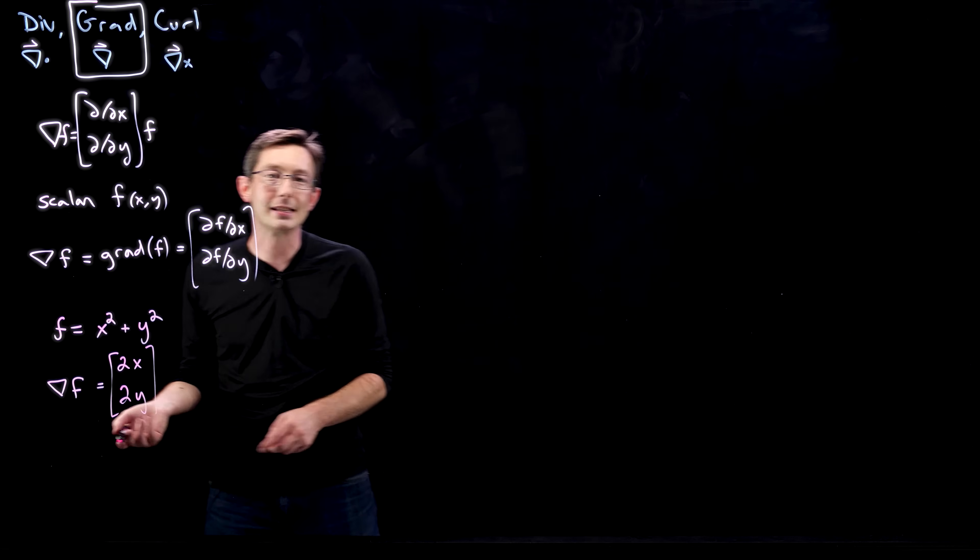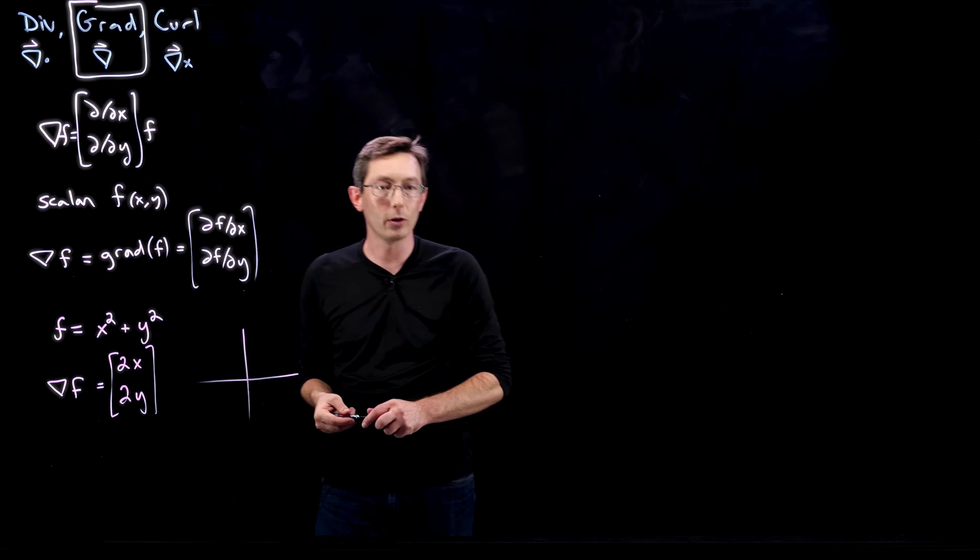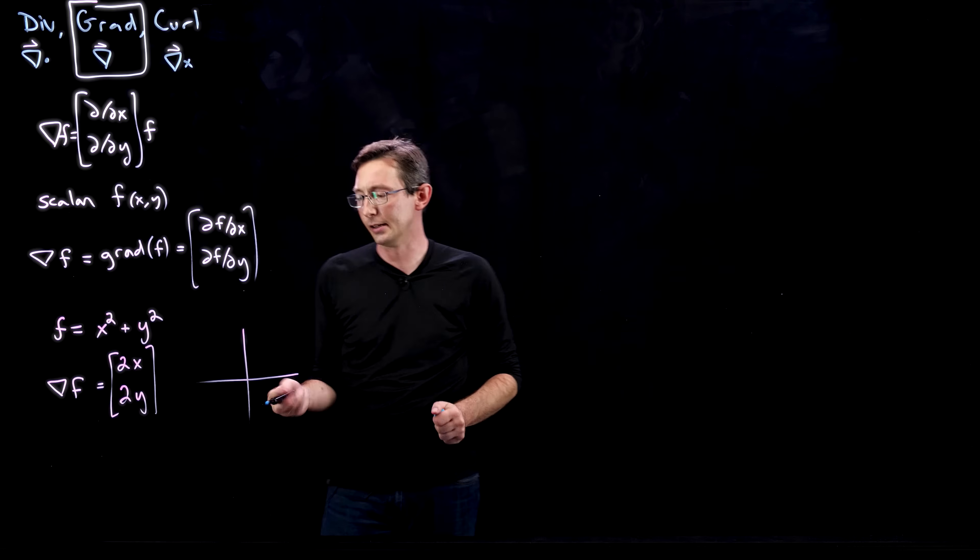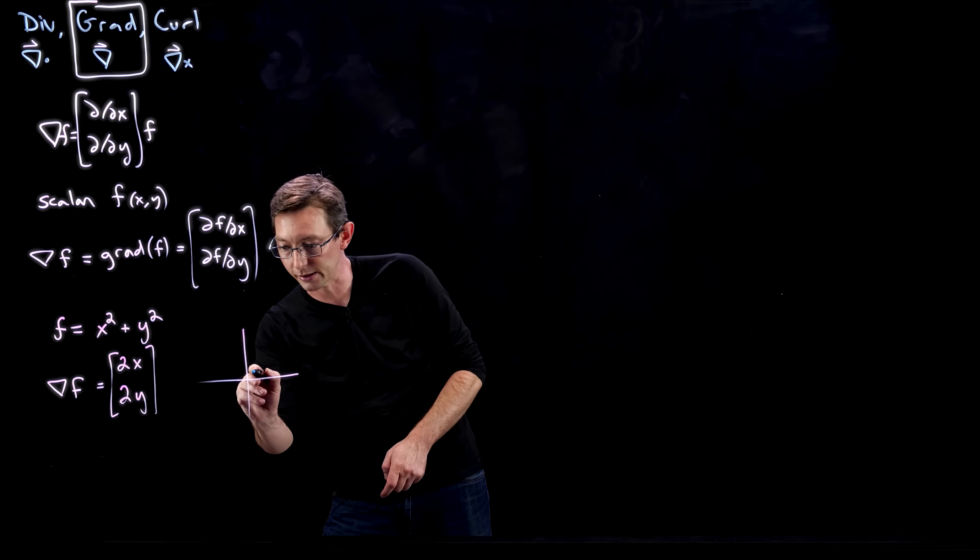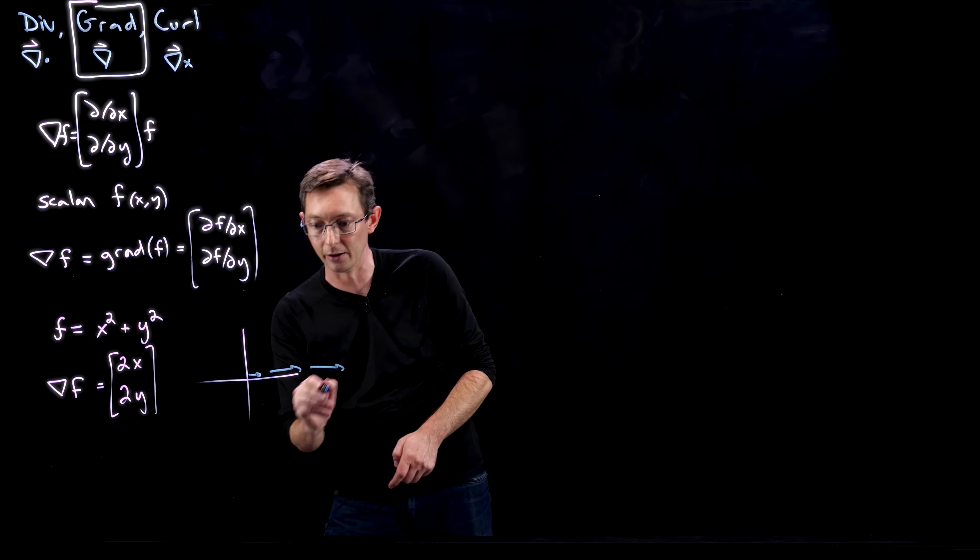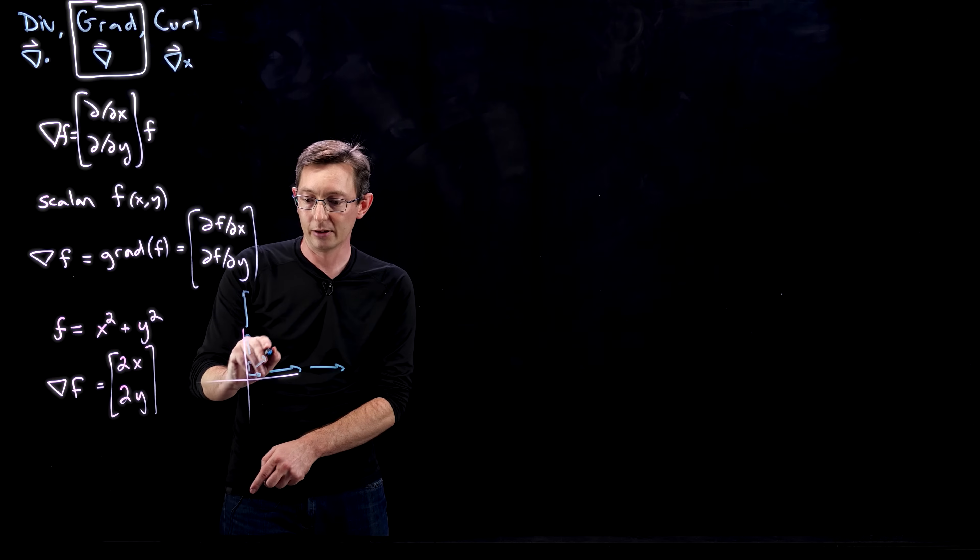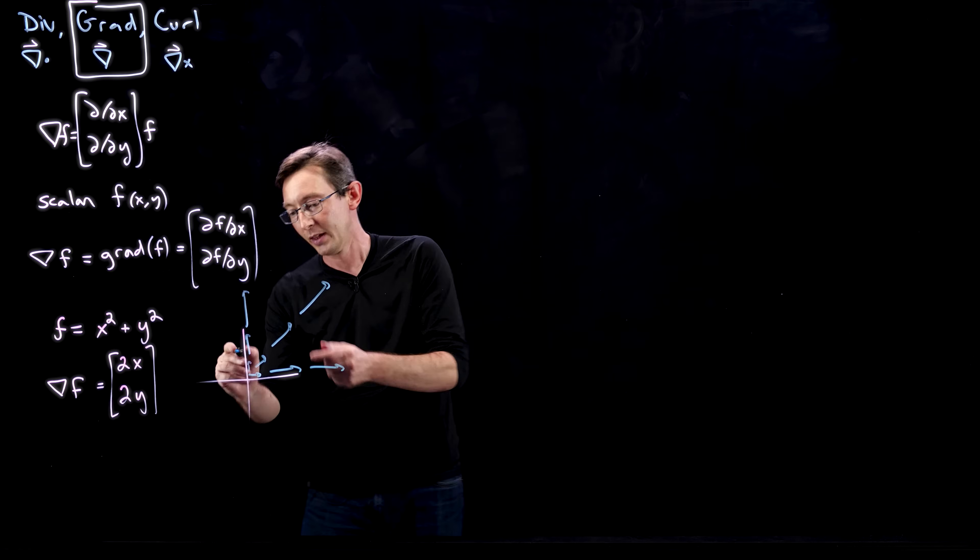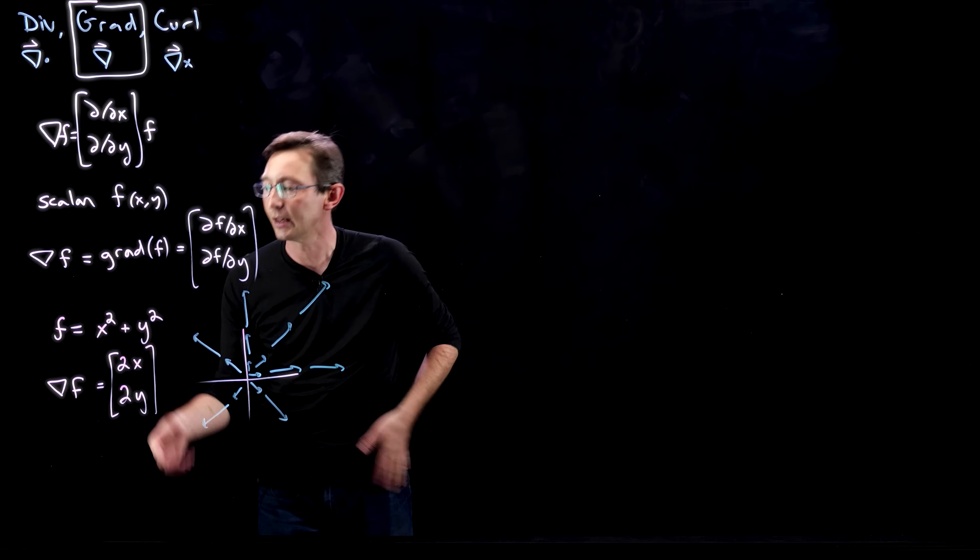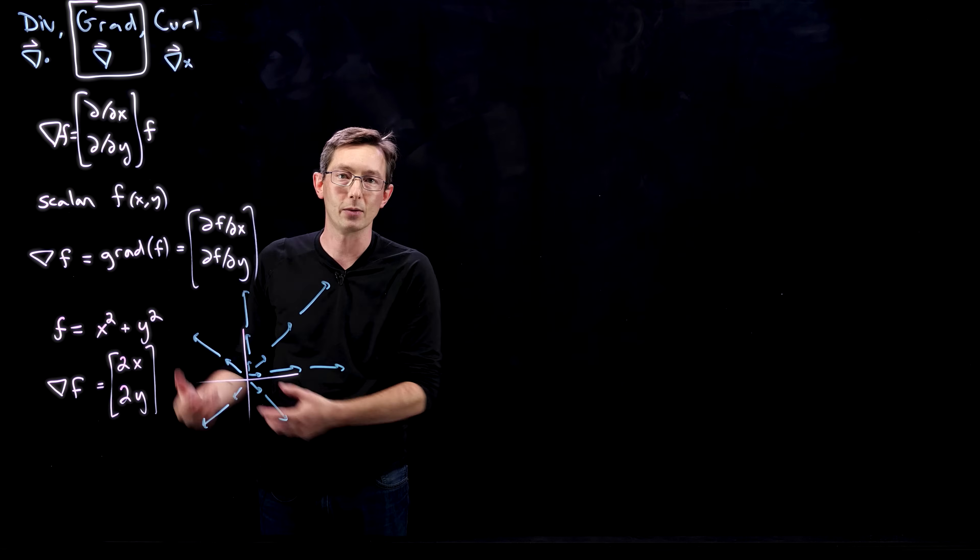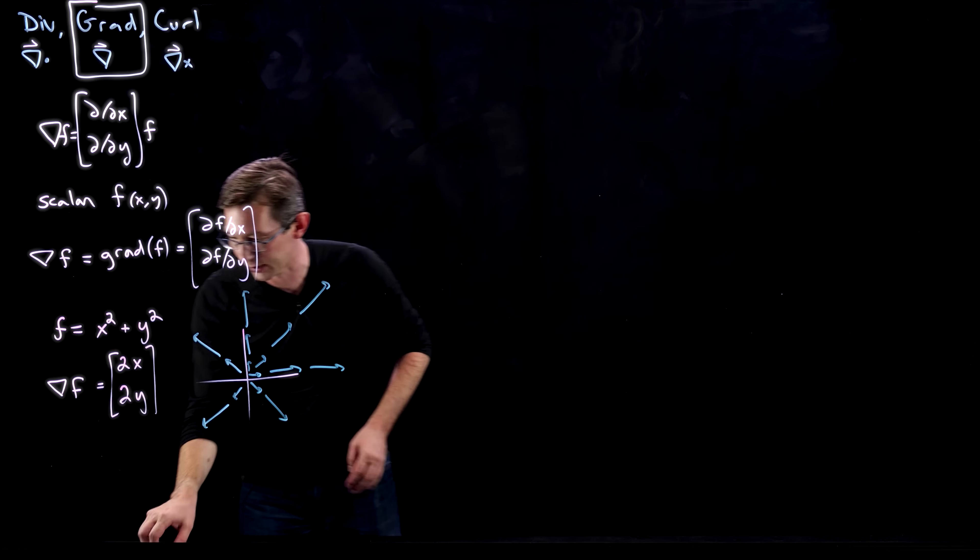If I plot that as a vector field in x and y, where maybe this is the origin, what we're going to have is: as x and y get bigger, this vector field gets bigger in the x direction. It starts off small and gets bigger and bigger. In the y direction for larger y it gets bigger, and similarly on the diagonals, the farther I go it gets bigger in all of the directions. Very intuitive, easy to compute for a given scalar function x² + y².